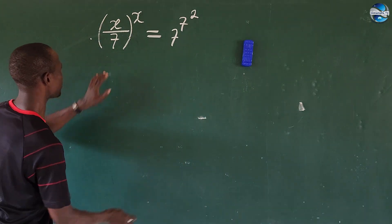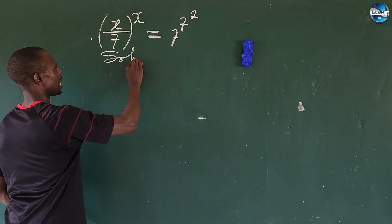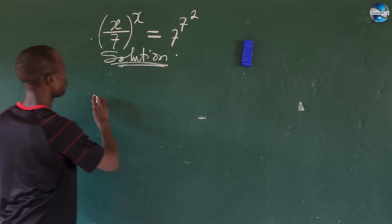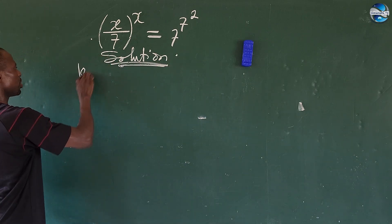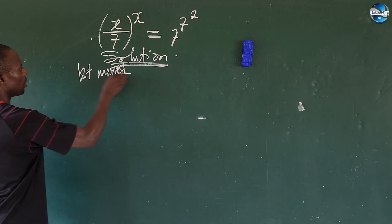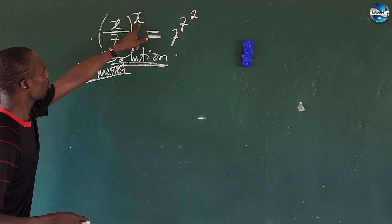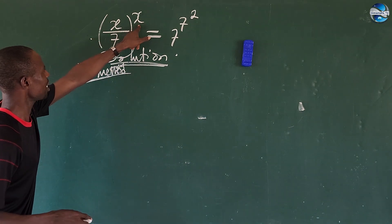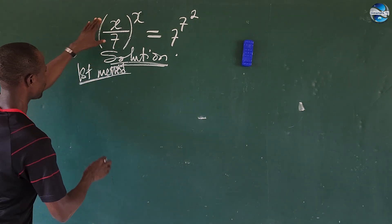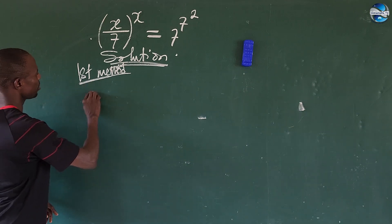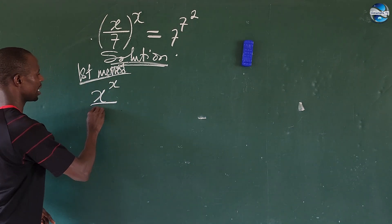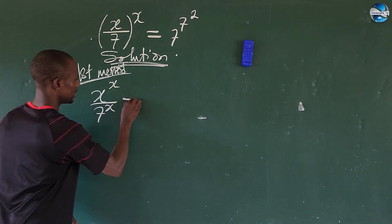So we're taking the first method. Now I'm going to use this exponent to open up everything inside the bracket. And so this is going to give us x to the power of x, all over 7 to the power of x.